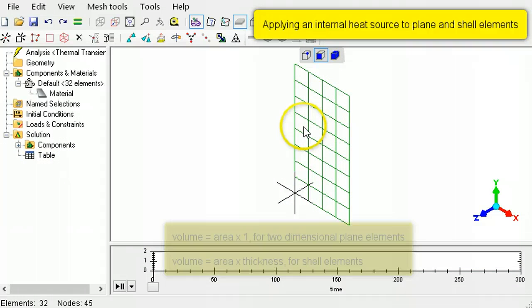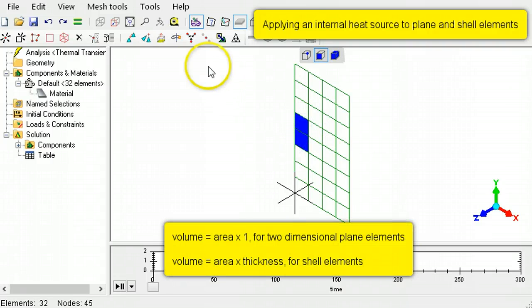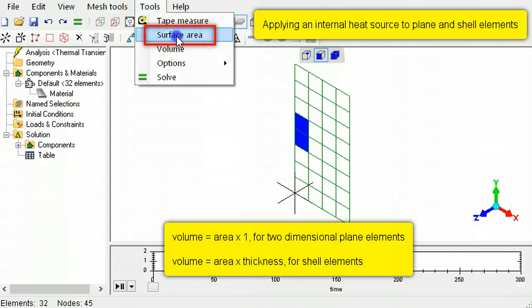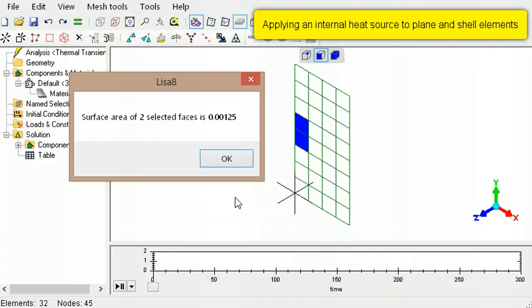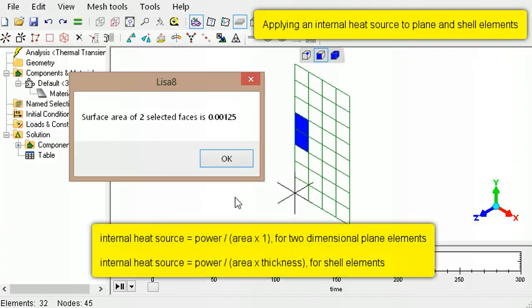For two dimensional problems, as the thickness is 1, the volume should be calculated as area into 1. The internal heat generation will then be specified as power per area into 1.